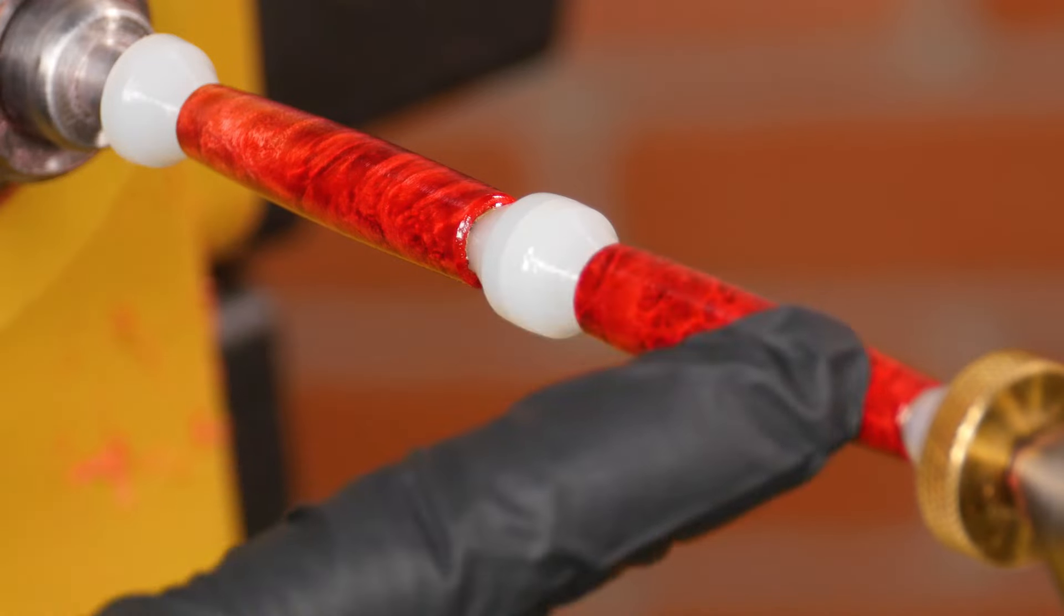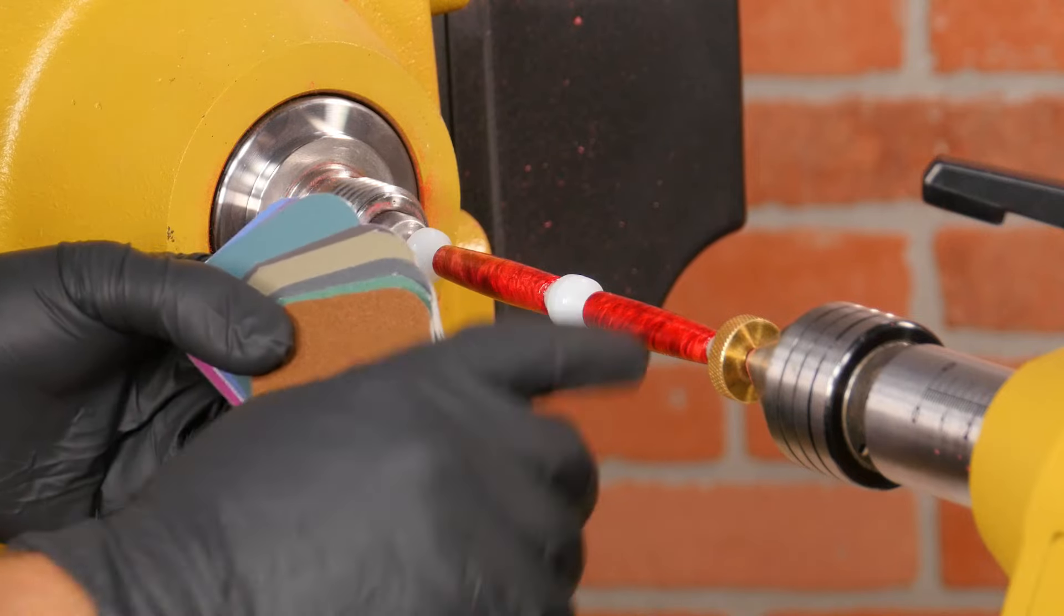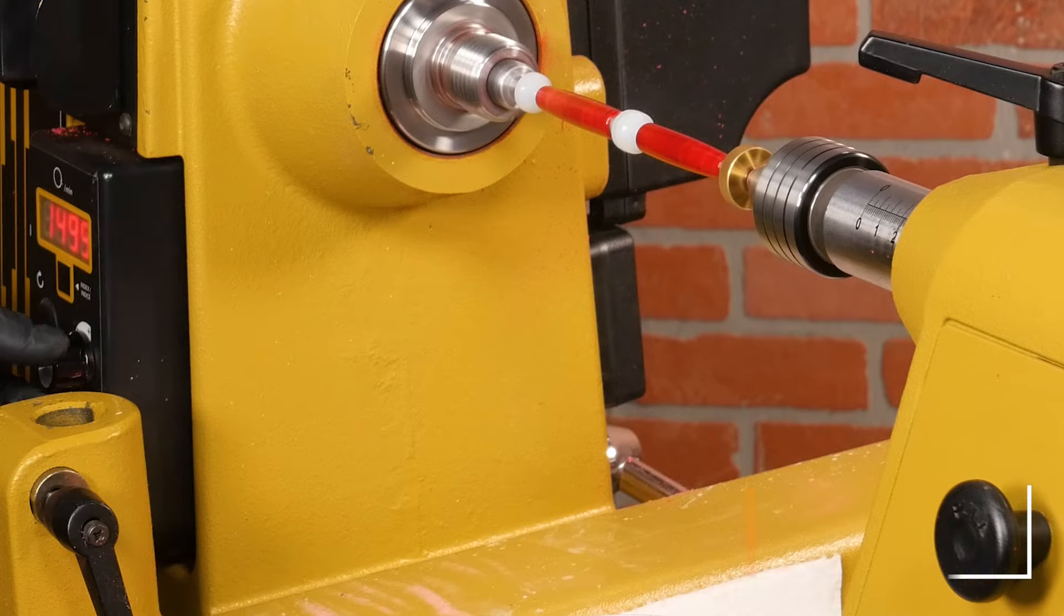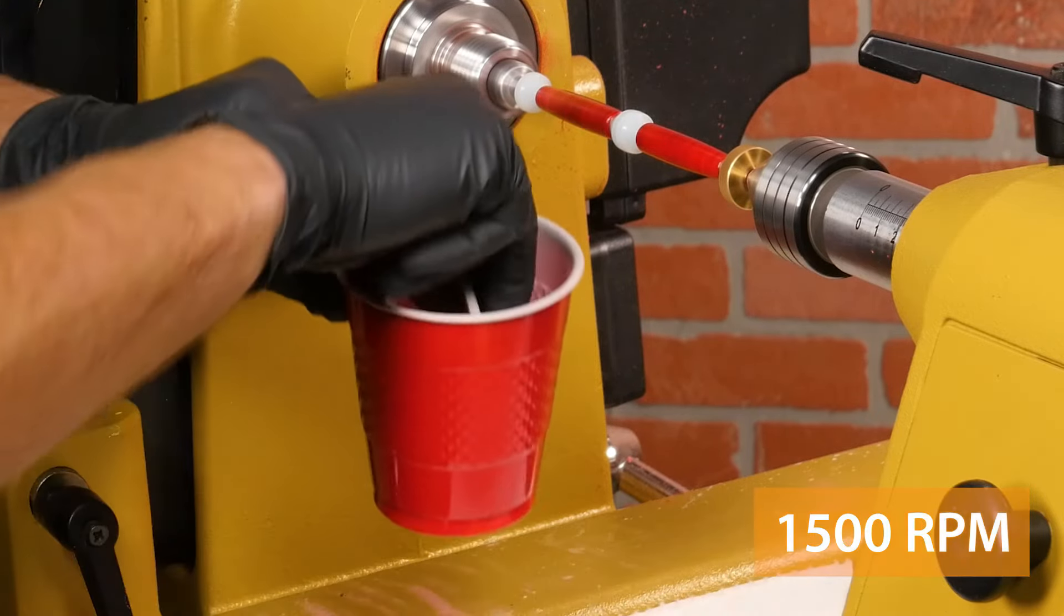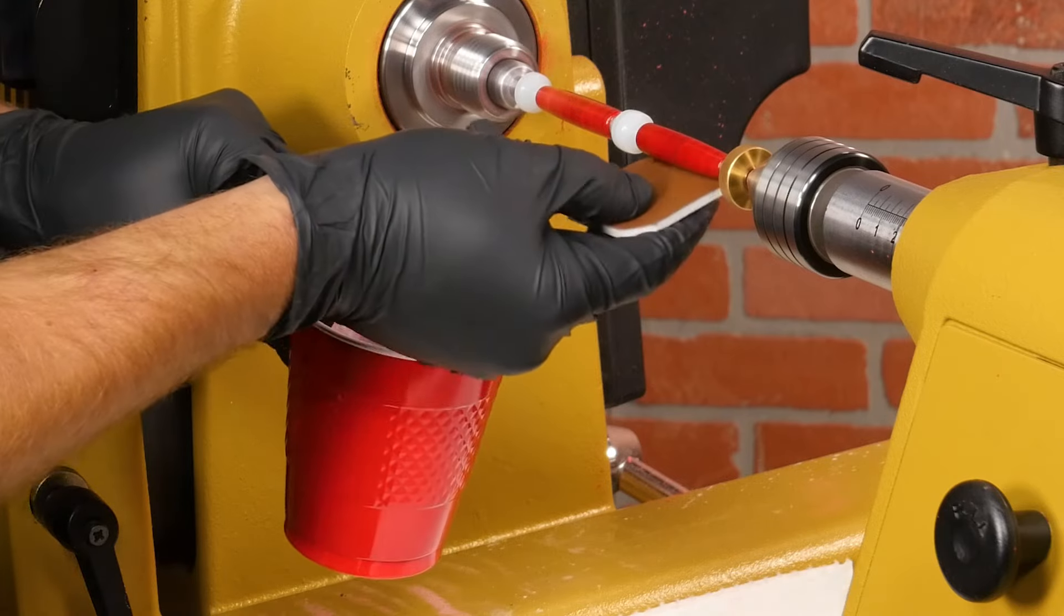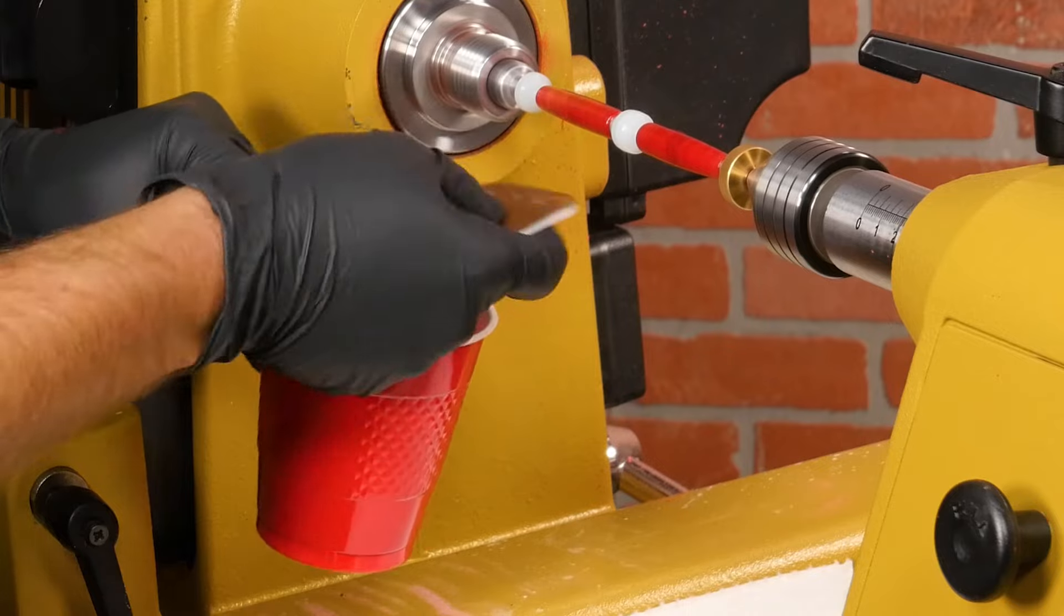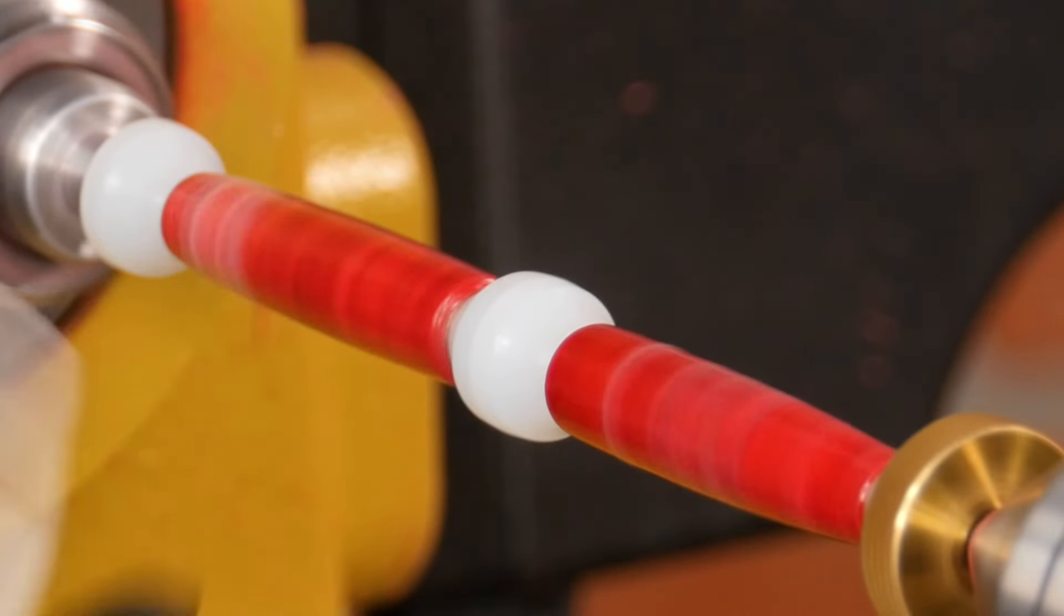Once you've built up a thick CA finish, it's time to smooth it out with some fine grit sandpaper. I recommend microsurface pen finishing pads because they're very easy to use and produce a glass-like finish. Bring the lathe speed back up to 1500 RPM, then dip each pad in water starting with 1500 grit.